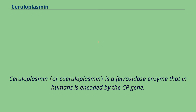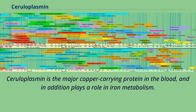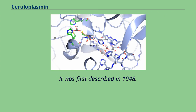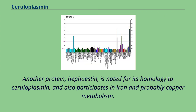Ceruloplasmin is a ferroxidase enzyme that in humans is encoded by the CP gene. It is the major copper-carrying protein in the blood, and in addition plays a role in iron metabolism. It was first described in 1948. Another protein, hephaestin, is noted for its homology to ceruloplasmin, and also participates in iron and probably copper metabolism.